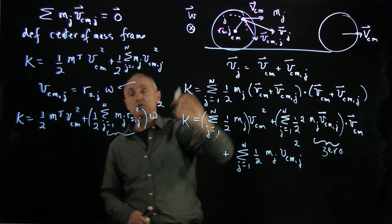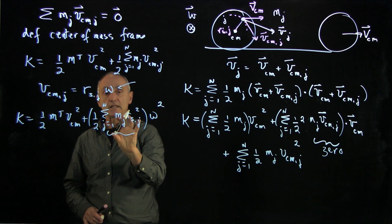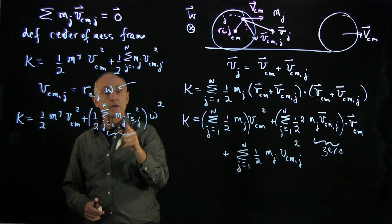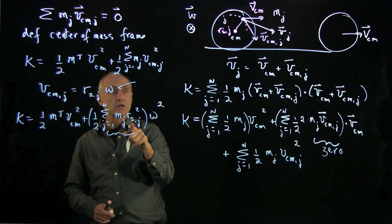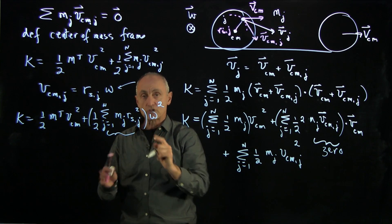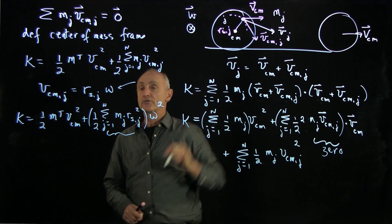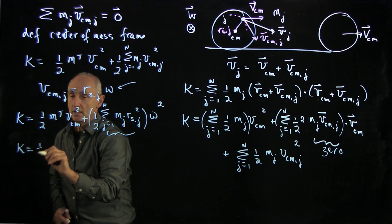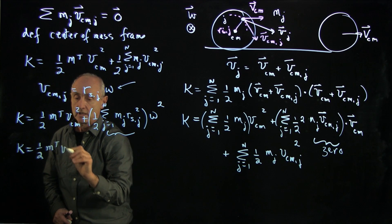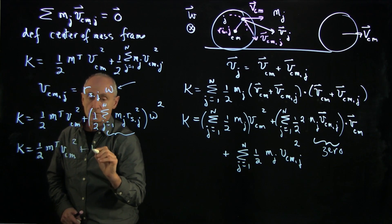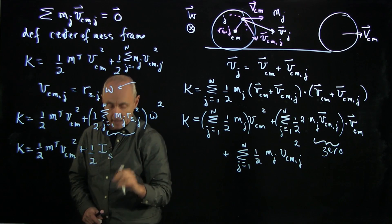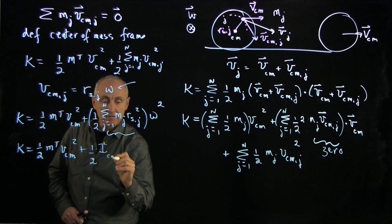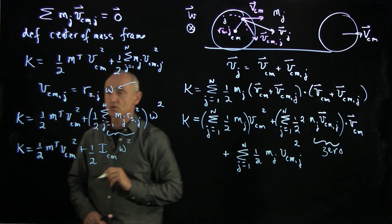And because this is a continuous body, and we take the limit, as we've done before, as mj goes to 0, this quantity of mass times distance squared is just the moment of inertia about the center of mass of that body. And in conclusion, k is 1/2 m total, the center of mass velocity squared, plus 1/2 the moment of inertia about the center of mass, times the angular speed squared.